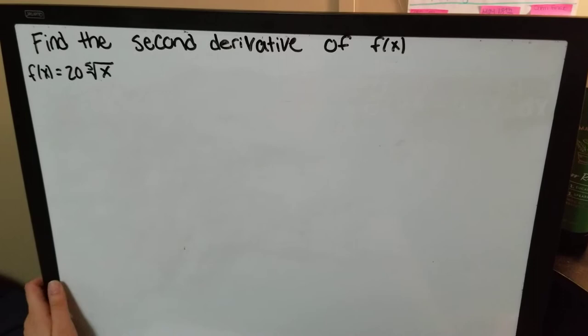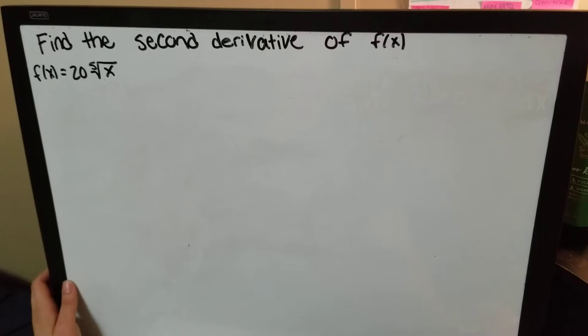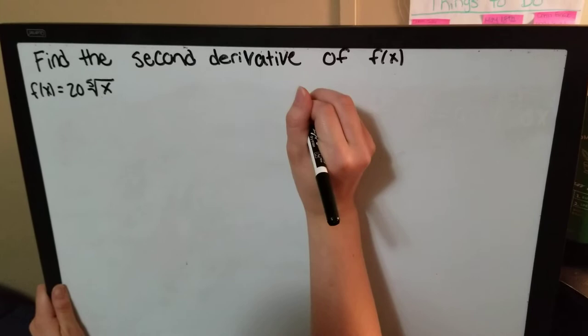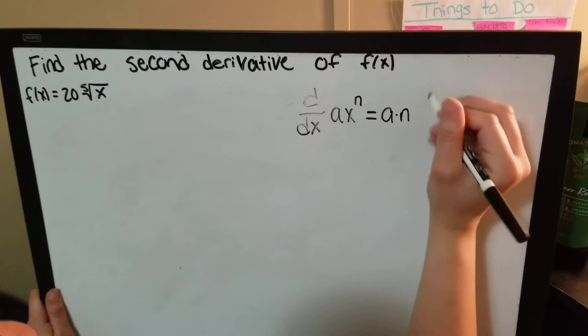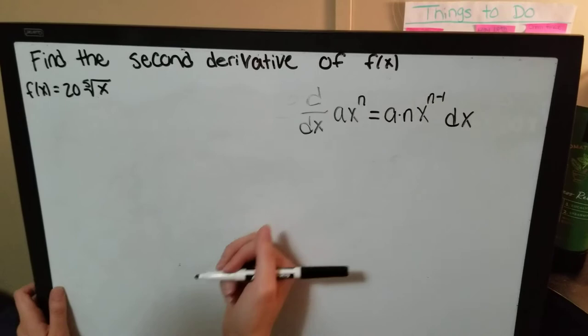In order to find the derivative, we can use the power rule. The power rule is defined as the derivative of a x to the n, which equals a times n, x to the n minus 1 dx. With this knowledge, we can now work out this problem.